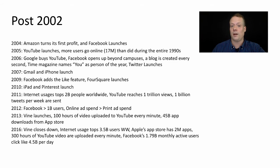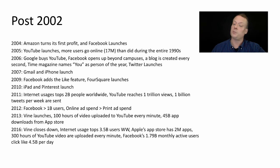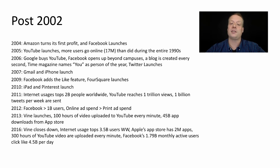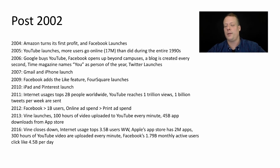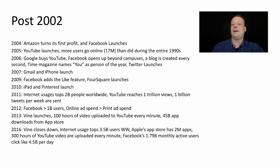In 2005, YouTube launches and more users go online than in the entire early 1990s — at that point, 17 million users. In 2006, Google buys YouTube and Facebook opens up beyond campuses — it was initially limited to just a select few universities. By this time, people are increasing their content creation: a blog is created every second. Time magazine names 'you' as person of the year because we were creating all this great content on the web. Twitter also launches, and things just start to spiral upward with more and more content being created.